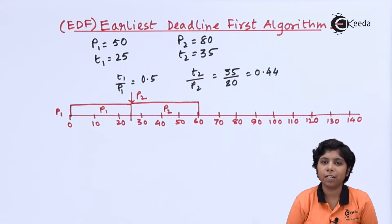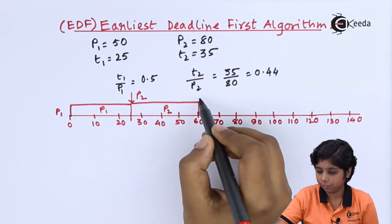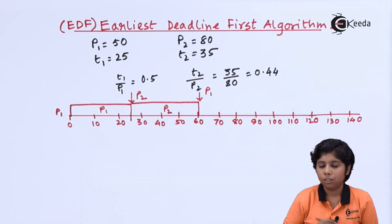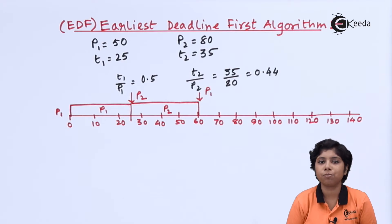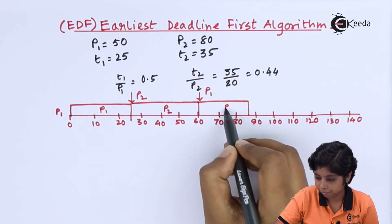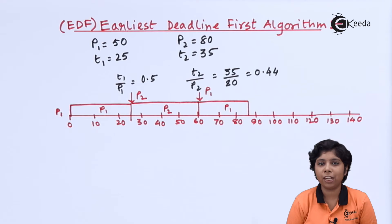At the end of 60 milliseconds, P1 will again arrive. Now P1 will finish its execution of 25 milliseconds, that is 60 plus 25, equals 85, which is less than its deadline requirement of 100 milliseconds. Now P2 will arrive. P2 has a deadline of 80 plus 80 equals 160, and P1 has a deadline of 50 plus 50 plus 50 equals 150. So P1 has higher priority, and P1 will be given the processing of CPU again.